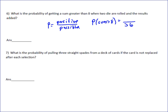36 possibilities. 6 times 6 is 36. You've got 6 numbers you can get on the first die, 6 numbers you can get on the second die, multiply those together, and you get 36.